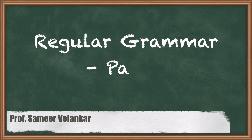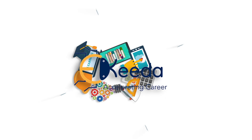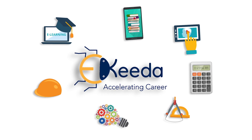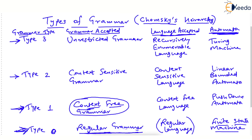Hello dear students. Let's continue our discussion on types of grammars. We were learning about Chomsky's hierarchy and we saw in the previous video Type 0 grammar. Now let's proceed with Type 1 grammar. Type 1 grammar, as written here, is called Context Free Grammar, or CFG.